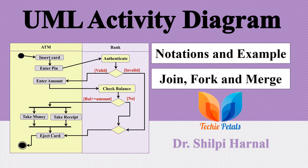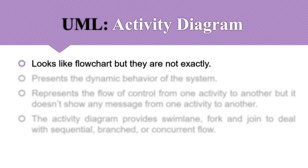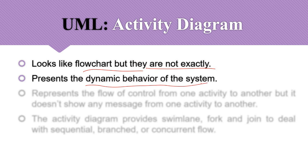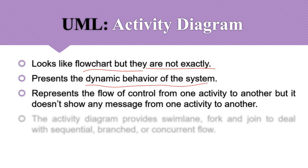Welcome to the next lecture of the UML lecture series. In this video we are going to discuss another important UML diagram — the activity diagram — and we will discuss each and every notation with examples. Activity diagrams basically look like flowcharts but they are not exactly flowcharts; even their notations are different. They represent the dynamic behavior of the system like interaction diagrams and represent the flow of control from one activity to another.